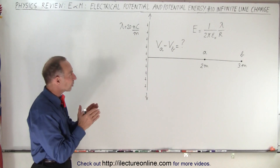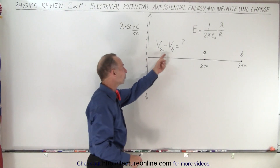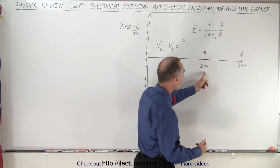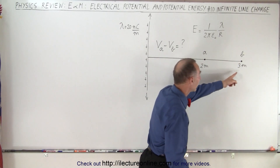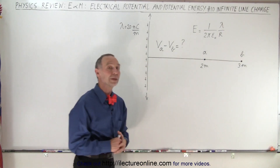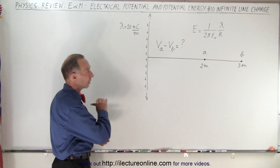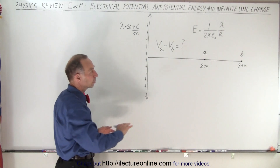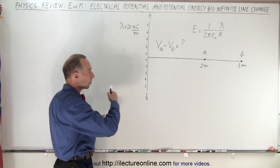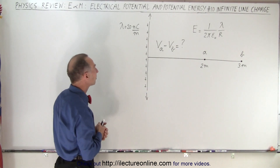We can use that equation to find the voltage difference between the voltage at some point A, like two meters away, and some other point B, three meters away. We can assume that the farther away you go the lower the voltage, and the closer you get the higher the voltage — that seems to make sense.